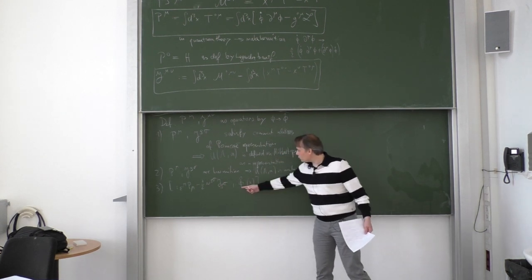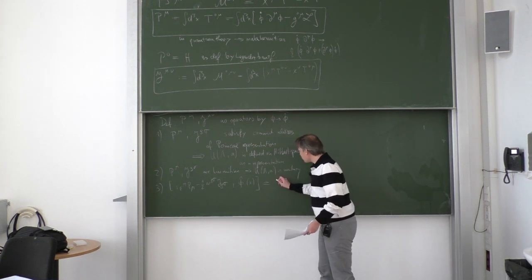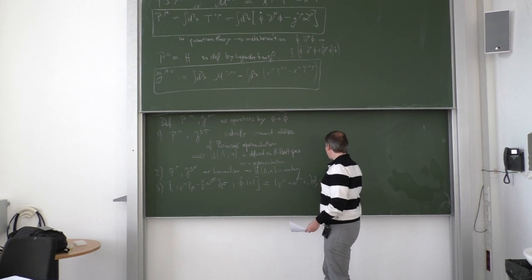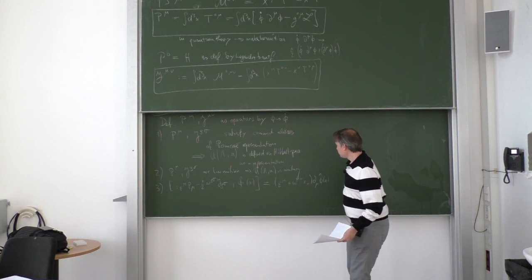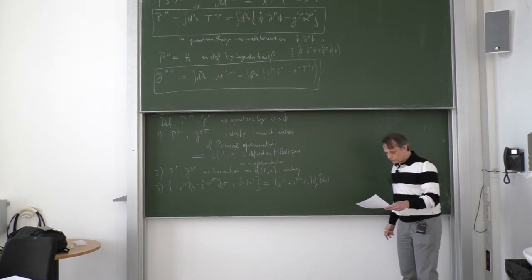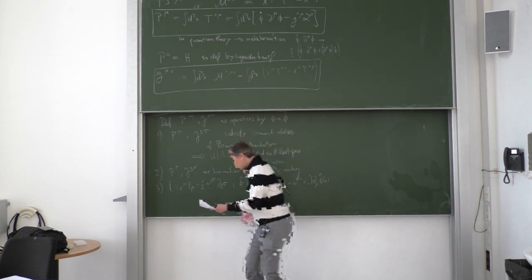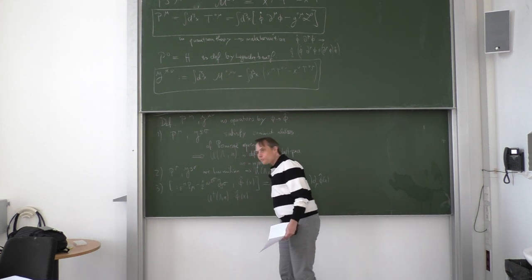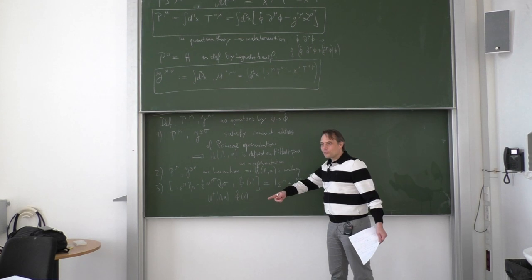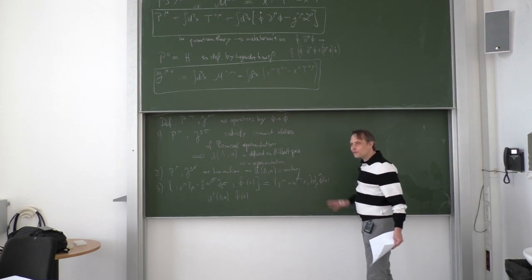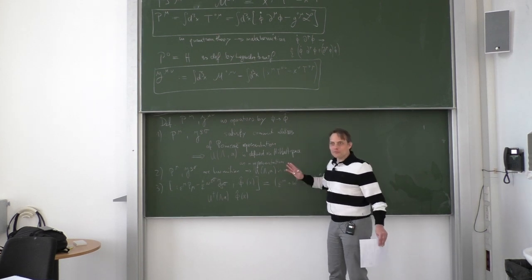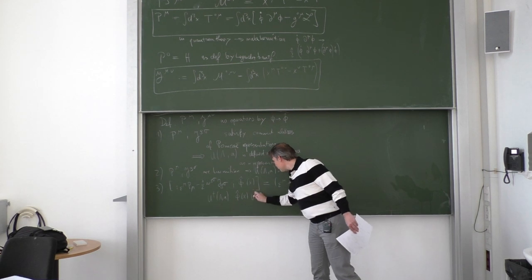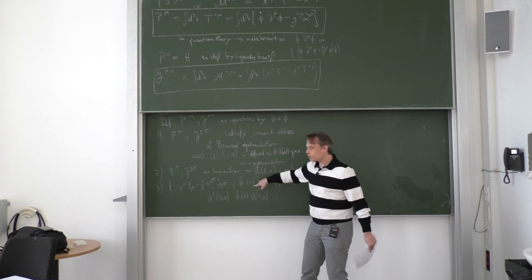We can evaluate more commutation relations. For an infinitesimal Poincaré transformation — iε_μ P^μ minus i/2 ω_ρσ J^ρσ — we can compute the commutator with the quantum field operator φ̂(x). You can evaluate this explicitly because you know how it is composed of fields and momenta, and you know the commutation relations between them. The outcome is (ε_μ + ω_{μν} x^ν) times ∂^μ φ(x), which is just the infinitesimal version of the scalar field transformation.